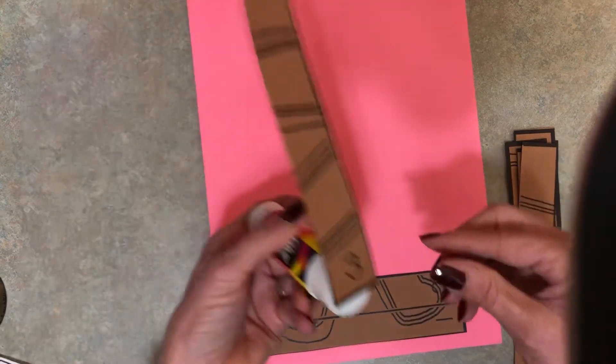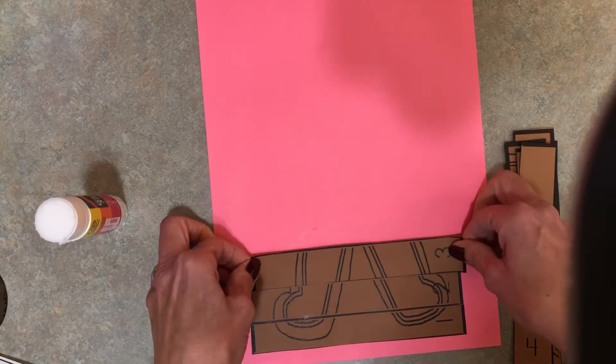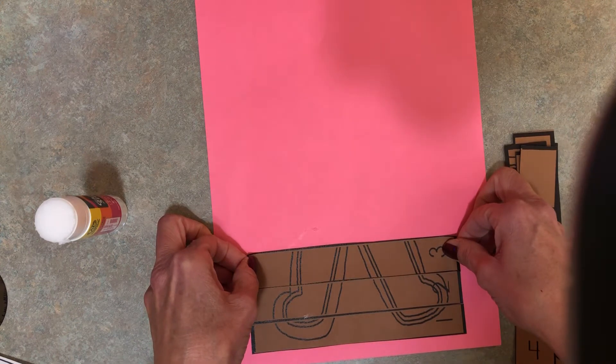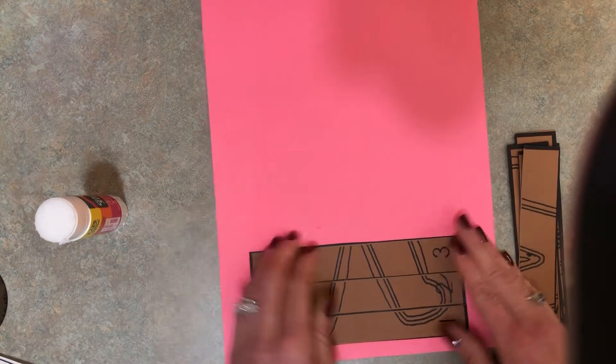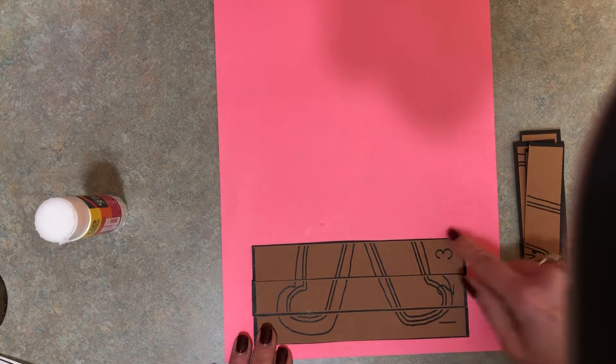The next number after two is three. Line it up—you want it touching. And then you have a number line going down on the side: one, two, three.